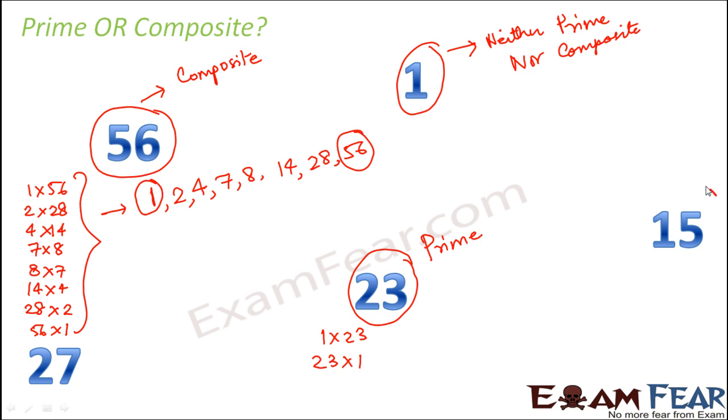Think of 15. So 15 can be written as 1 into 15. It can also be written as 3 into 5, 5 into 3, 15 into 1. So basically it has more than 2 factors like 1, 3, 5, 15. Therefore this is a composite number.